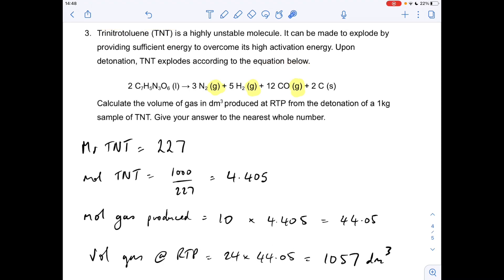Question three now, so we've got to calculate the volume of gas in dm cubed, made at RTP from the detonation of one kilo sample of TNT. Answer needs to be the nearest whole number. Okay, so first thing we'll calculate is the MR of TNT, so seven carbons, five hydrogens, three nitrogens, six oxygens, 227.